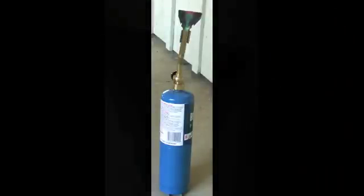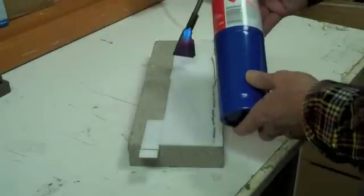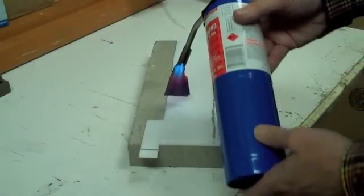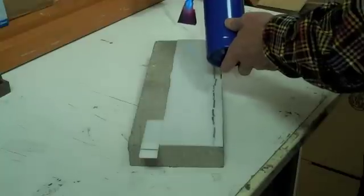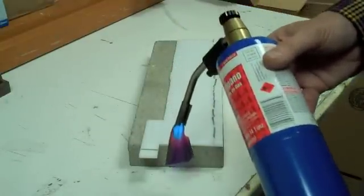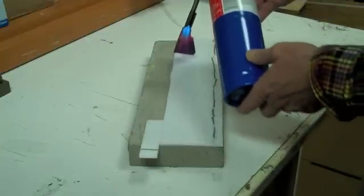To prepare the poly for bonding, we use a propane torch with a flame spreader. Adjust the torch so that the blue part of the flame does not exceed the end of the flame spreader. Hold the spreader about one inch from the poly and gently move the flame over the poly for a total exposure of three to four seconds.